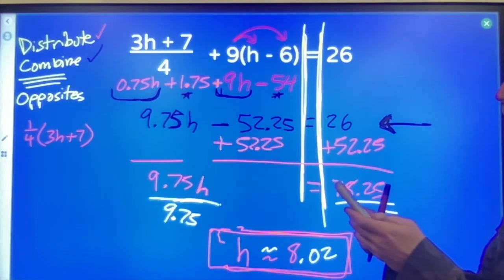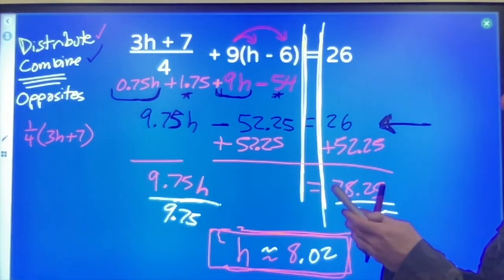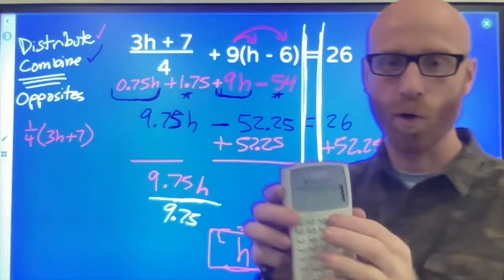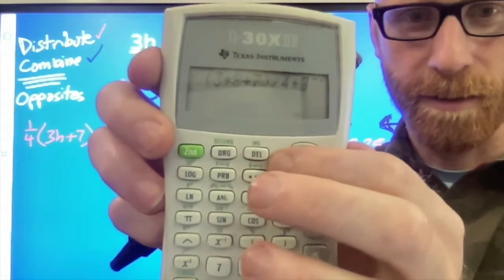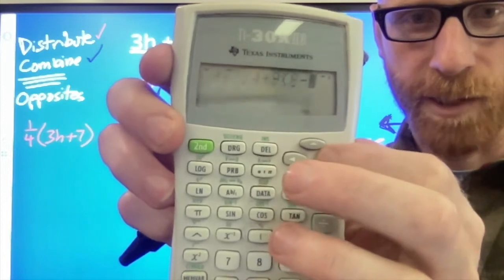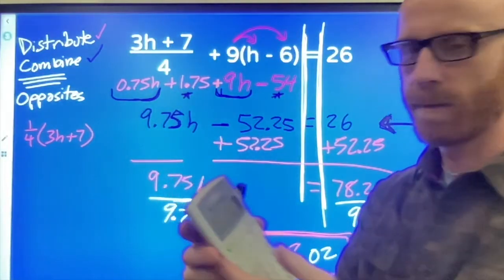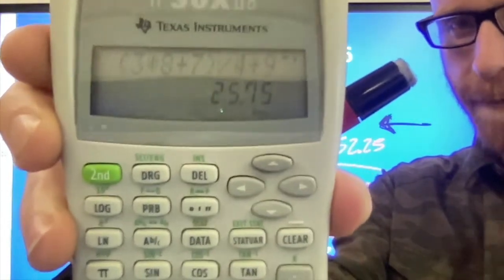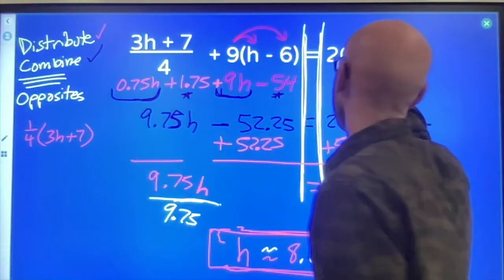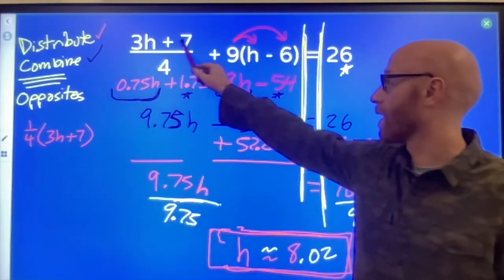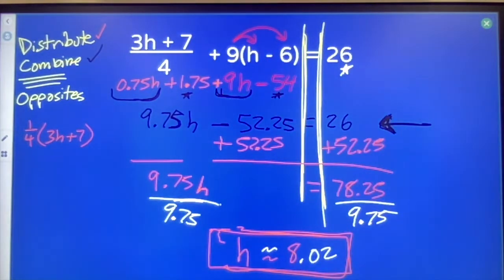3 times 8 plus 7, all of that over 4 plus 9 times 8 minus 6. Type the whole line in a calculator as it appears, hit answer. I'm getting very close to 26 and I knew that I wasn't going to get exactly 26 because this is an approximation, not an exact number.